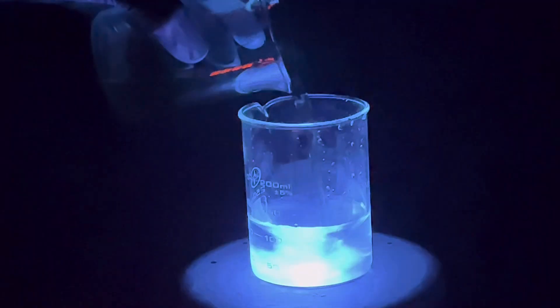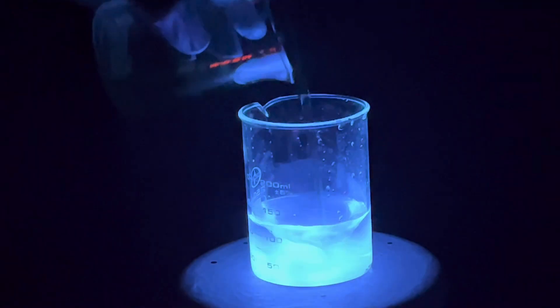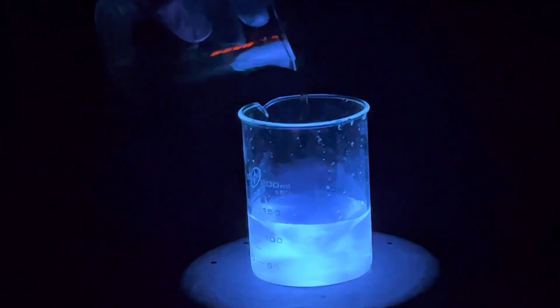When luminol gets oxidized, electrons in luminol are excited to a higher energy state. And as they return to the ground state they release energy in the form of a photon. The wavelength of the photon corresponds to the blue light which we see.